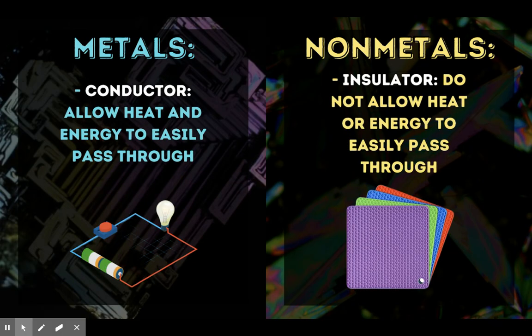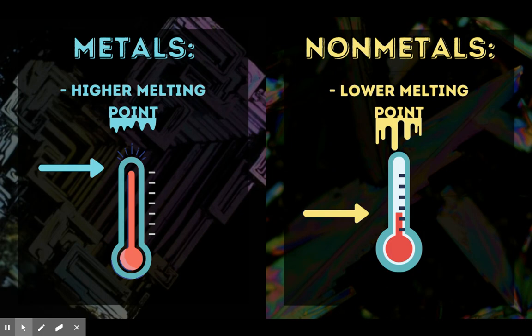Metals are good conductors, meaning they allow energy and heat to easily pass through, while nonmetals are insulators — they do not allow energy or heat to easily pass through, which is why we use nonmetals as pot holders to keep us from burning our hands. Metals have a higher melting point, which means they need a lot more heat to melt, while nonmetals have a lower melting point, so they can melt at a pretty low temperature.